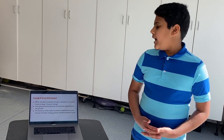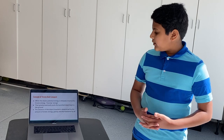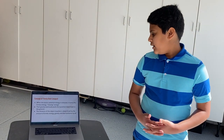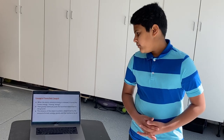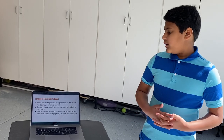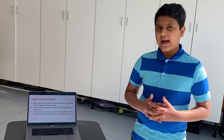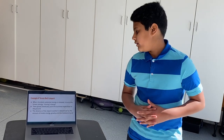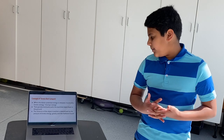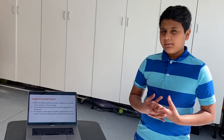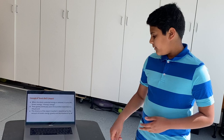The concept behind tennis ball catapults: when the elastic potential energy is released, it turns into kinetic energy — moving energy. Then gravity eventually pulls the launched object back to the ground. The distance the object travels is determined by the amount of kinetic energy, gravity, and air resistance.